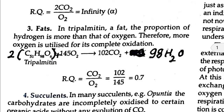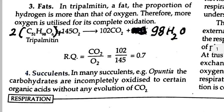Now for succulent plants — for example, Opuntia. Succulents are plants of arid climate, or desert plants. In succulents, carbohydrates are incompletely oxidized to some other organic acids.